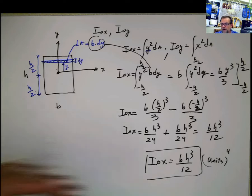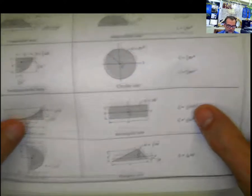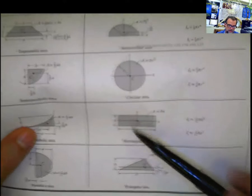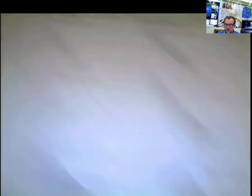Now, if you compare that with the tables that you find in the books, this is exactly what we get, b h cubed divided by 12. And this little dot here represents the centroid. And as you can see, the x and y-axis are located at the centroid.